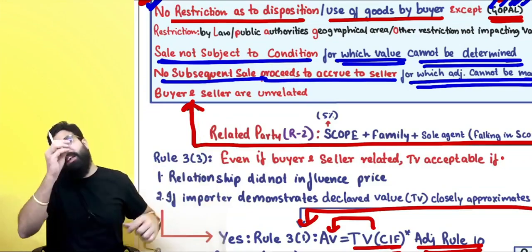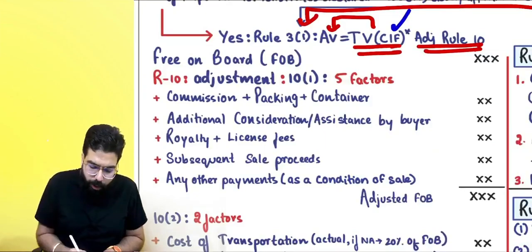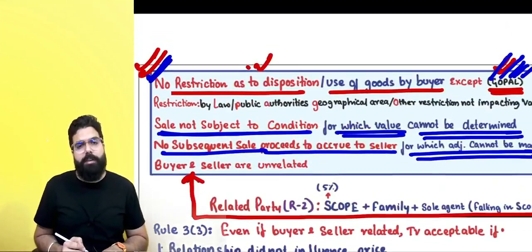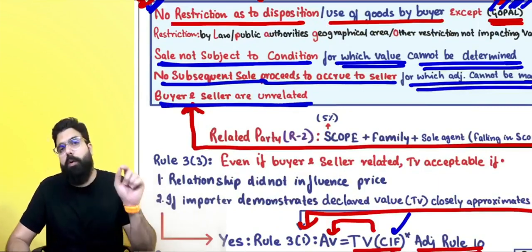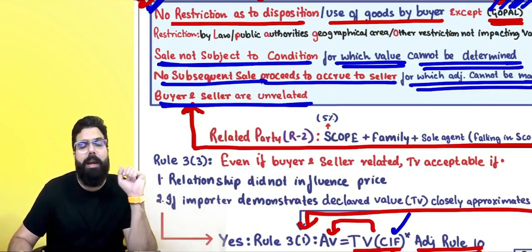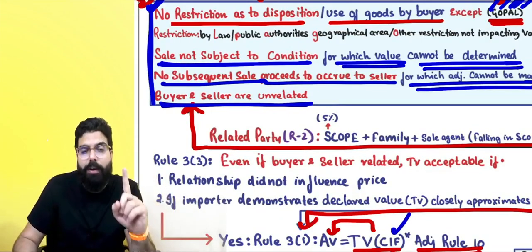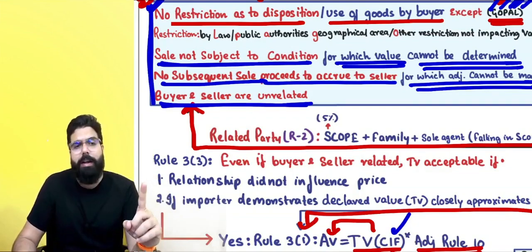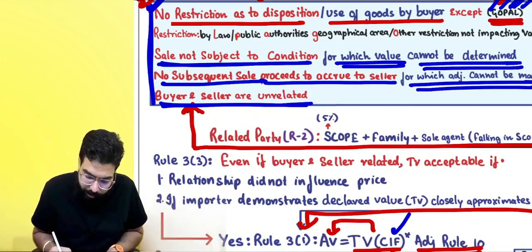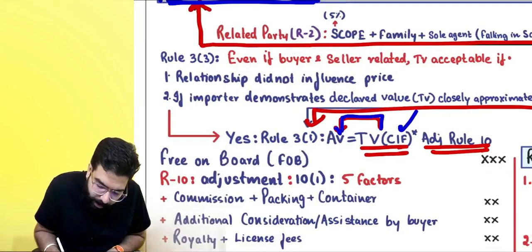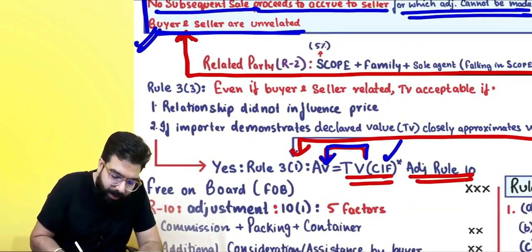If you can determine how much the subsequent sale proceeds will be, just add it to your transaction value. The fourth condition under Rule 3(2): the buyer and seller should be unrelated. If all four conditions are satisfied, your transaction value becomes the assessable value.